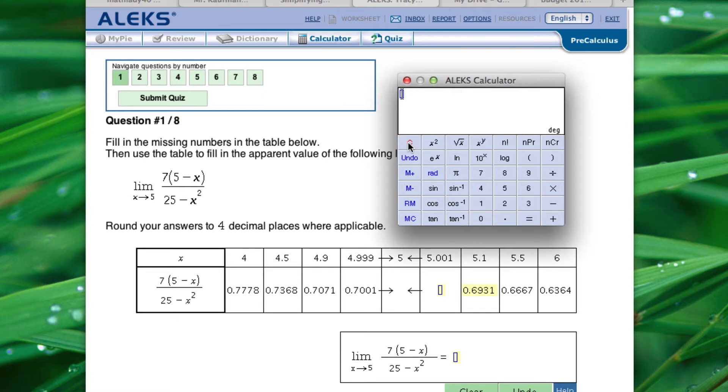Now we're going to clear this calculator. We're going to repeat the same process, but we're going to plug in 5.001 everywhere we have an x. So 7 times the quantity of 5 minus 5.001, close parenthesis, divide all of that by 25 minus 5.001 squared. And that gives you .6999. So 0.6999.